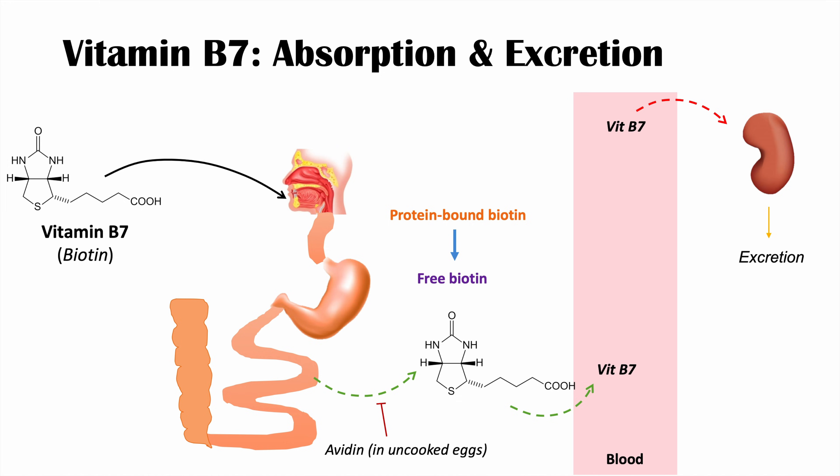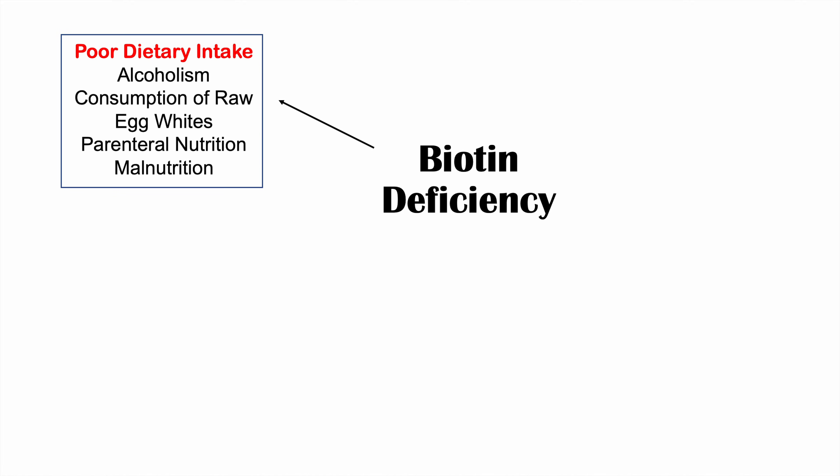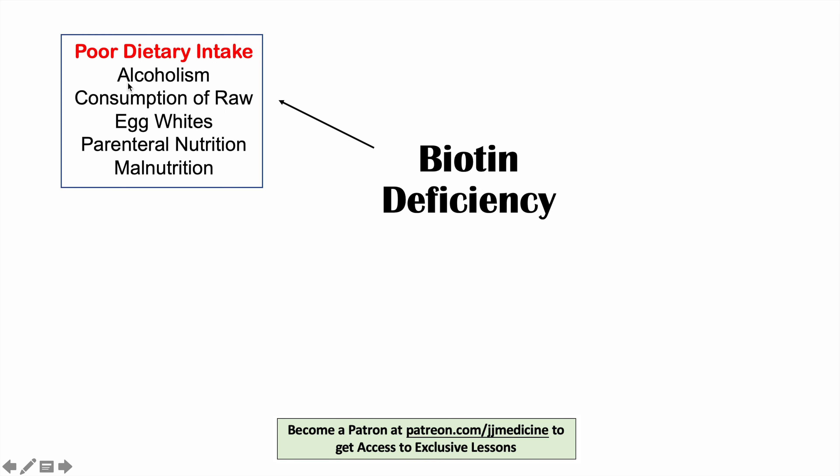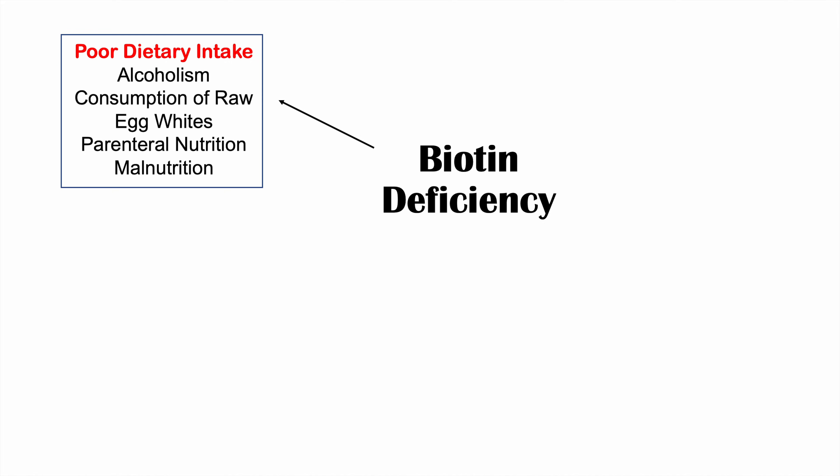What are some of the causes of a biotin deficiency? Because we get a significant amount from gut microbe synthesis, severe biotin deficiency can actually be quite rare, but a biotin insufficiency is possible. One category of causes is poor dietary intake. If you're not eating enough, this can cause a biotin deficiency. The patient population you'll see most often is patients with chronic alcoholism — multiple factors are involved, but one is insufficient dietary intake, and alcohol can also prevent the absorption of biotin itself.